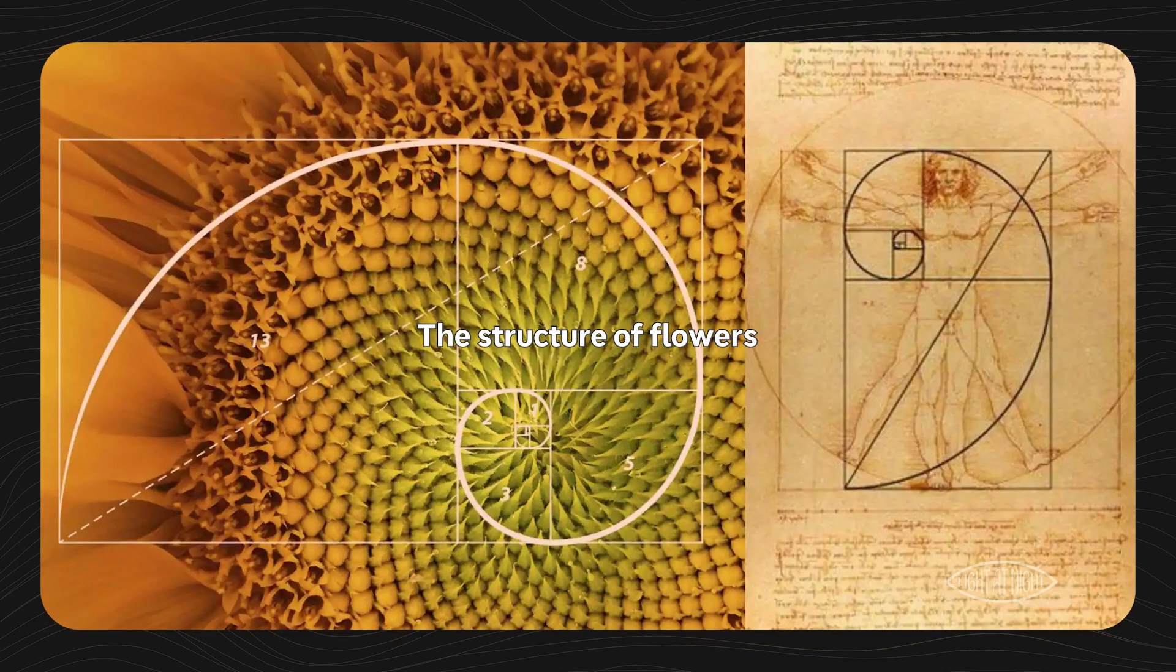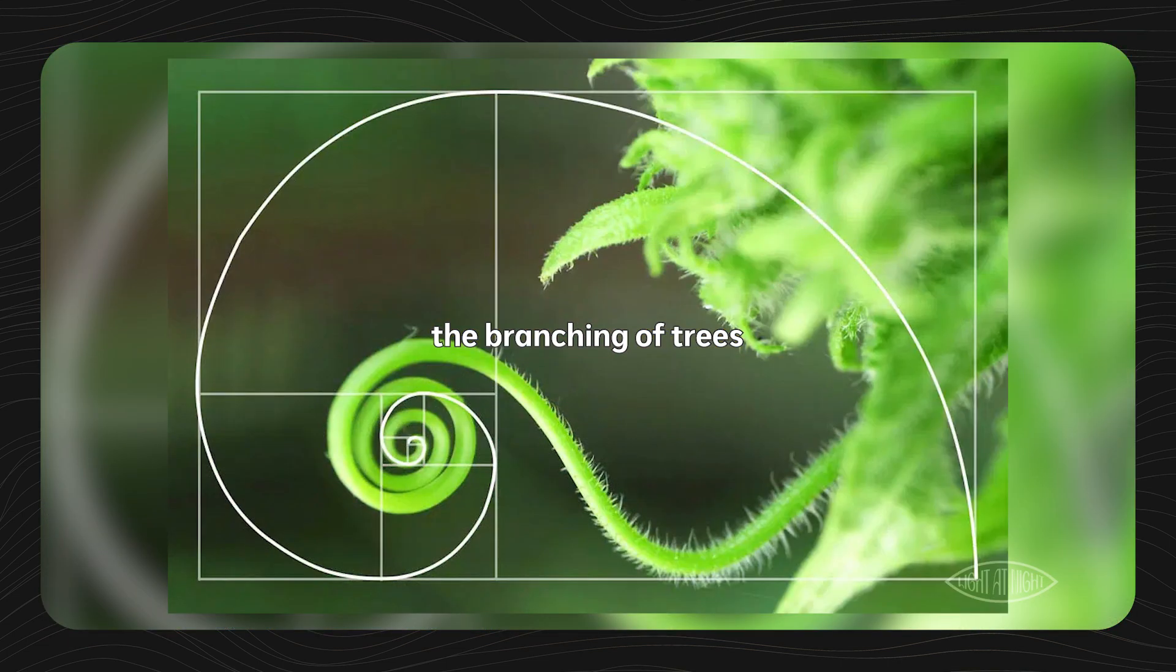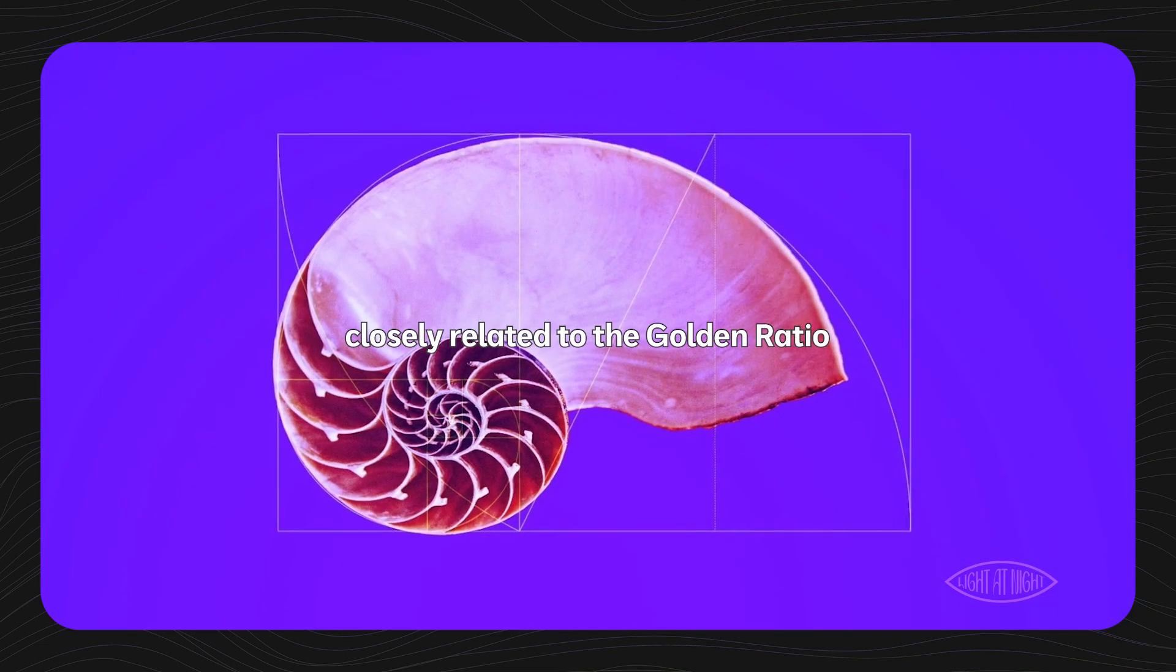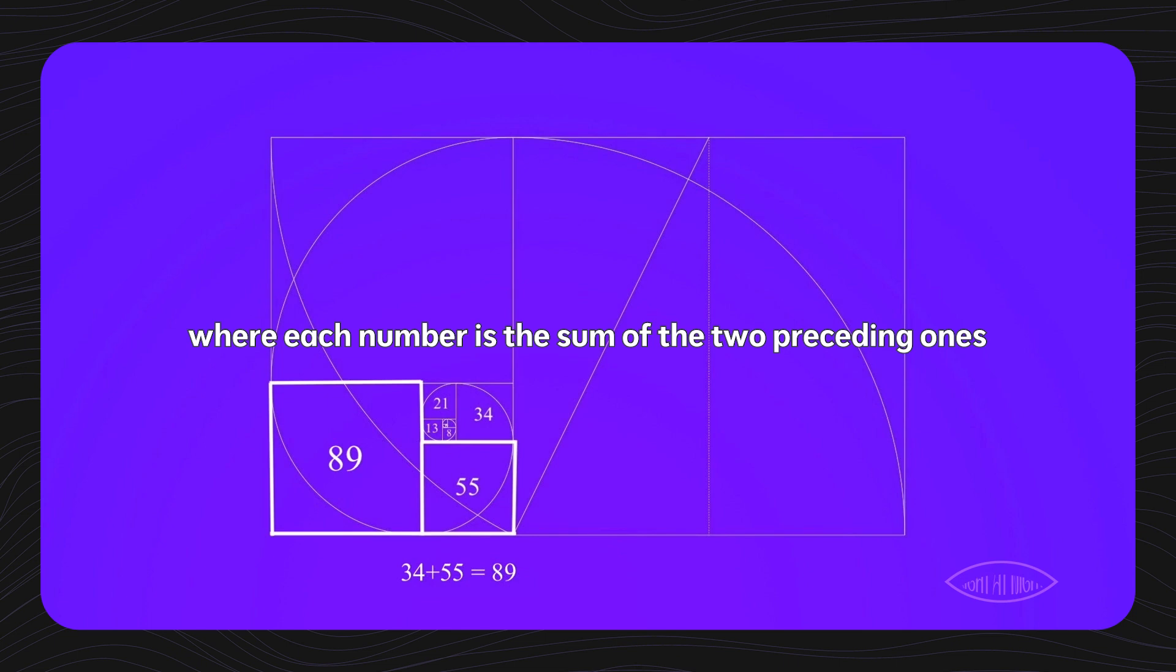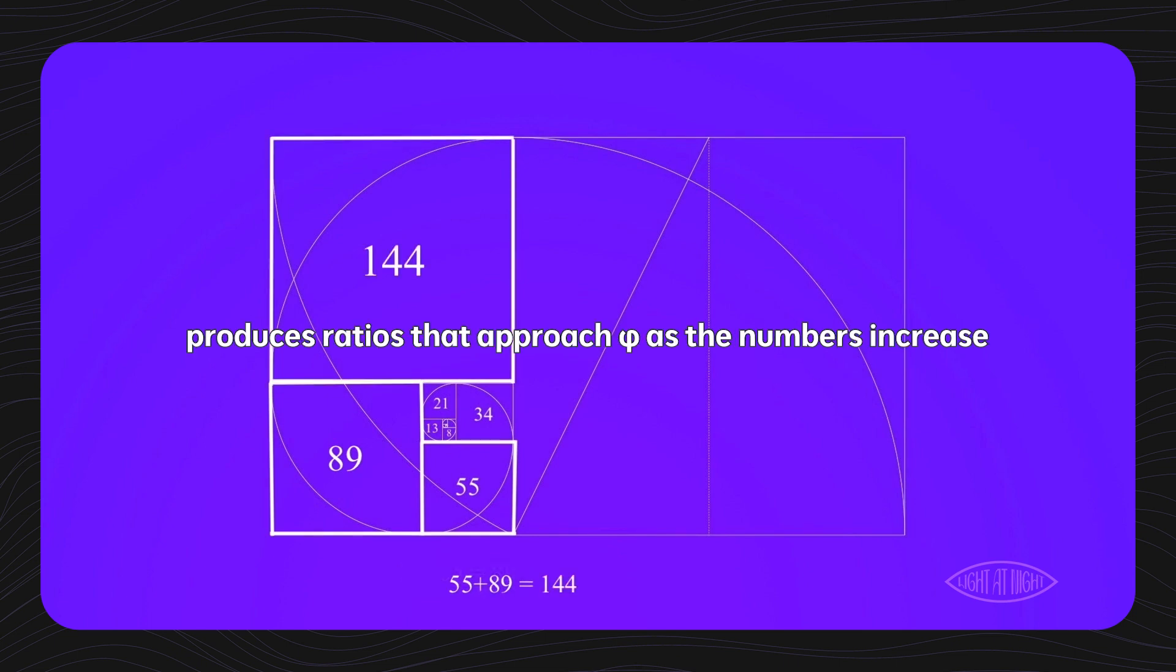The structure of flowers, the branching of trees, and the arrangement of leaves often conform to the Fibonacci sequence, closely related to the golden ratio. This sequence, where each number is the sum of the two preceding ones, produces ratios that approach phi as the numbers increase.